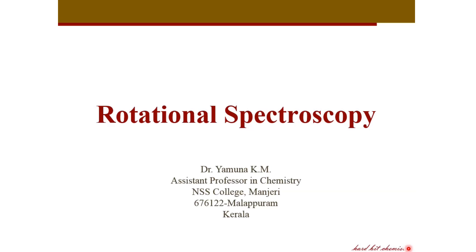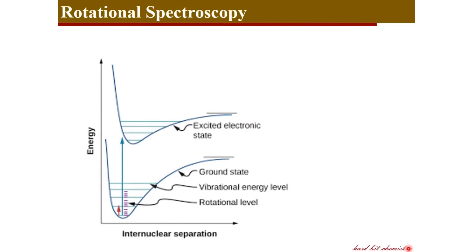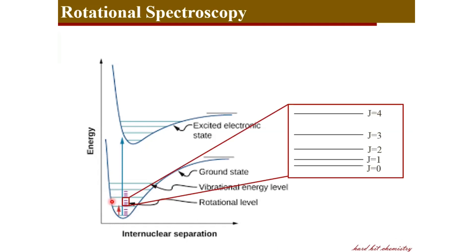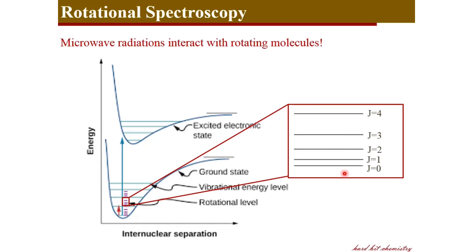Here we are to discuss the fundamentals of rotational spectroscopy. We have the potential energy diagrams for a molecule in the ground and excited states. Within a given electronic level we have several vibrational levels, and the vibrational levels are characterized by several rotational levels inside. The energy difference between these rotational levels corresponds to the energy of microwave radiation in the electromagnetic spectrum.